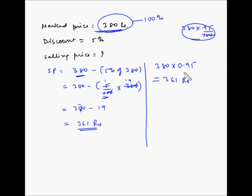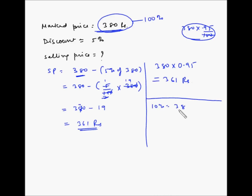Now if you don't have a calculator handy and you want to calculate it mentally while standing in the shop, what you do is deduct 5% of 380 from 380. The easiest way: 10% of 380 equals 38, and 5% will be that divided by 2, which equals 19.